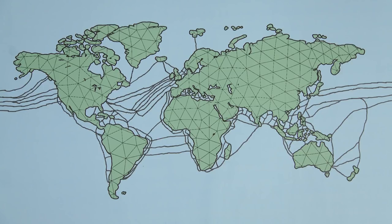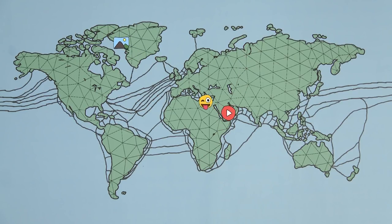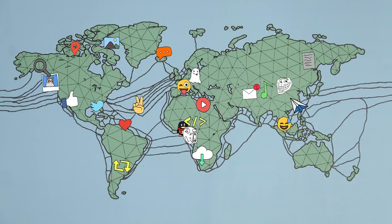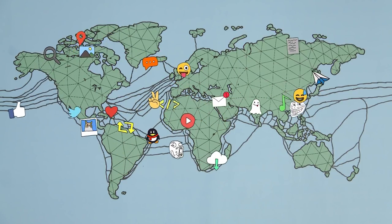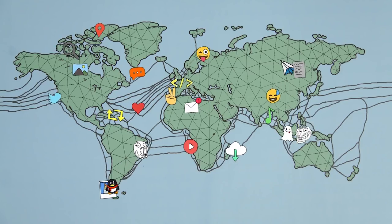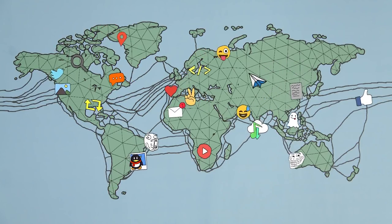Combined with our cables on land, we share and move data all around the world. Every video you watch, message you send or picture you share is flowing through this impressive global network. But all this data has a dark side.